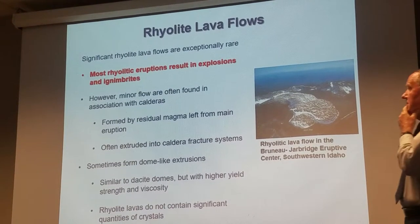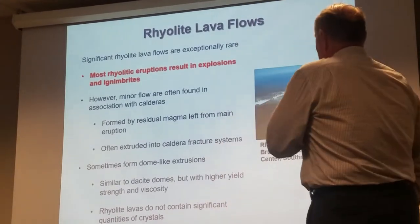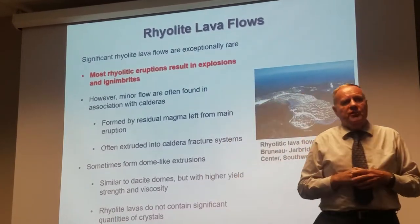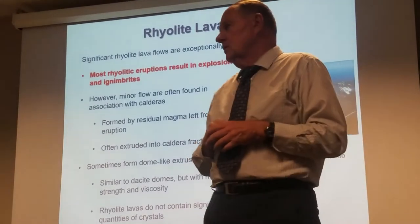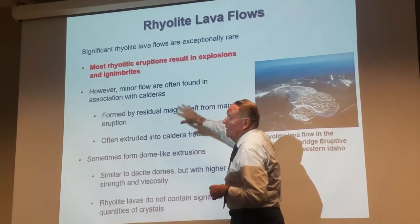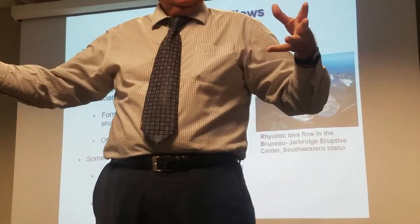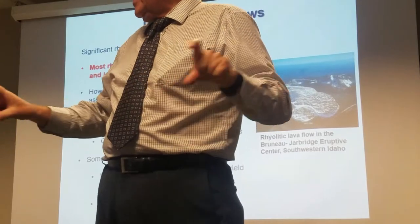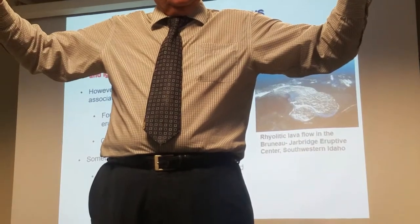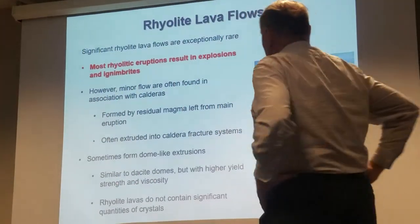Very rare, but you do see occasionally rhyolitic lava flows. Sometimes these have been confused with ignimbrites, but they do exist. The reason they're so rare is that most rhyolitic eruptions are going to explode, not flow. But they're sometimes found in association with calderas — once the caldera floor collapses, whatever remaining magma is in the magma chamber gets pushed out toward the sides of the caldera through whatever fracture system it can find, and those will sometimes result in these rhyolitic lava flows.